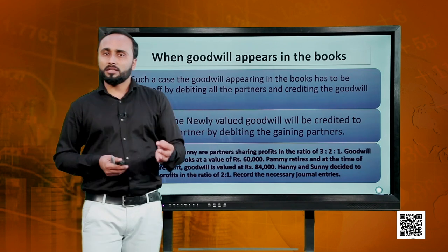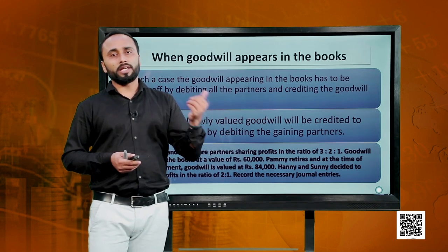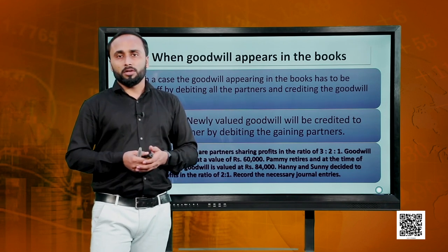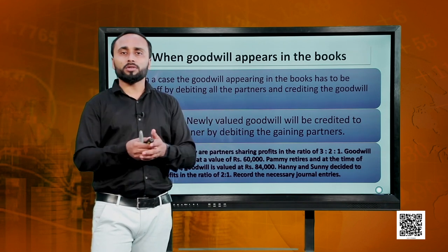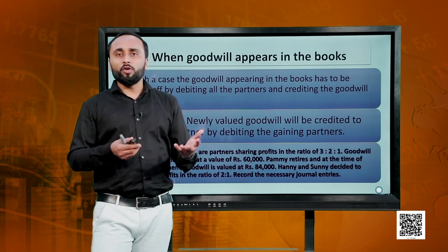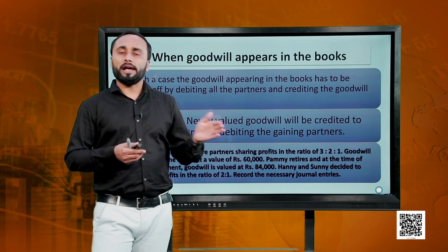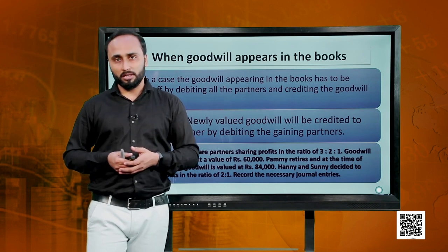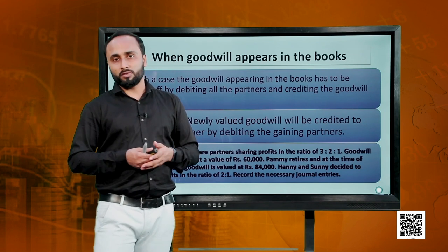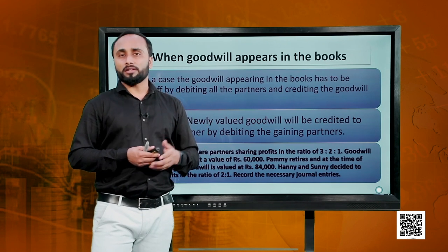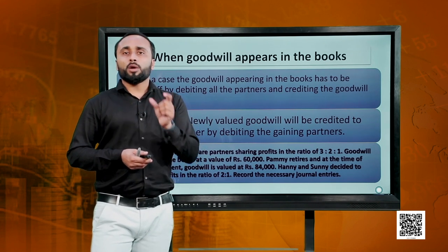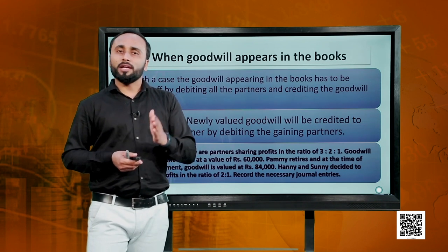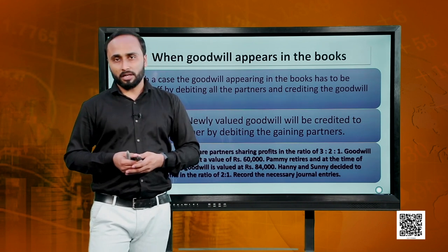Goodwill is an asset appearing in the balance sheet on the asset side. Since it is an asset being removed or written off, it has to be credited — that is what you have learnt in the rules for journaling. So you credit the asset which is goodwill, and you debit the partners. After writing off this existing goodwill, we will do the same thing with the new goodwill that we did in the previous class.